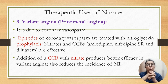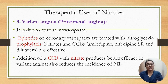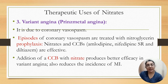Use of nitrates in variant or Prinzmetal angina: this type of angina is usually due to coronary vasospasm. Episodes of coronary vasospasm are treated with nitrates for prophylaxis, and combining nitrates with calcium channel blockers like amlodipine, nifedipine SR, and diltiazem is effective. Addition of a calcium channel blocker with nitrate produces better efficacy in variant angina and also reduces the incidence of myocardial infarction.